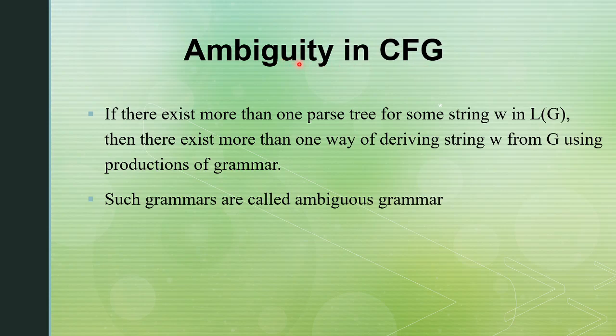What is meant by ambiguous grammar or ambiguity in grammar? By definition, if there exists more than one parse tree for some string w in L(G), then there exists more than one way of deriving string w from G using the productions of the grammar. Such grammars are called ambiguous grammars.